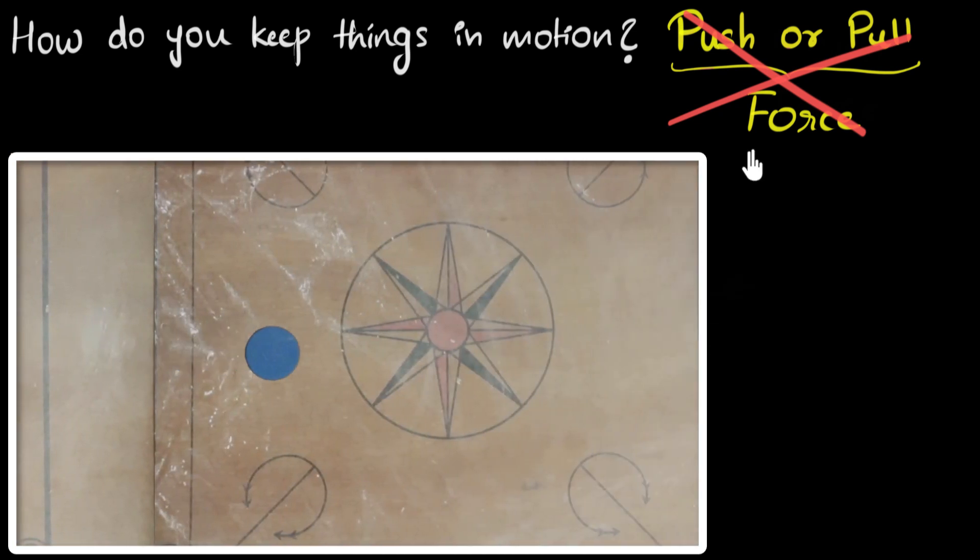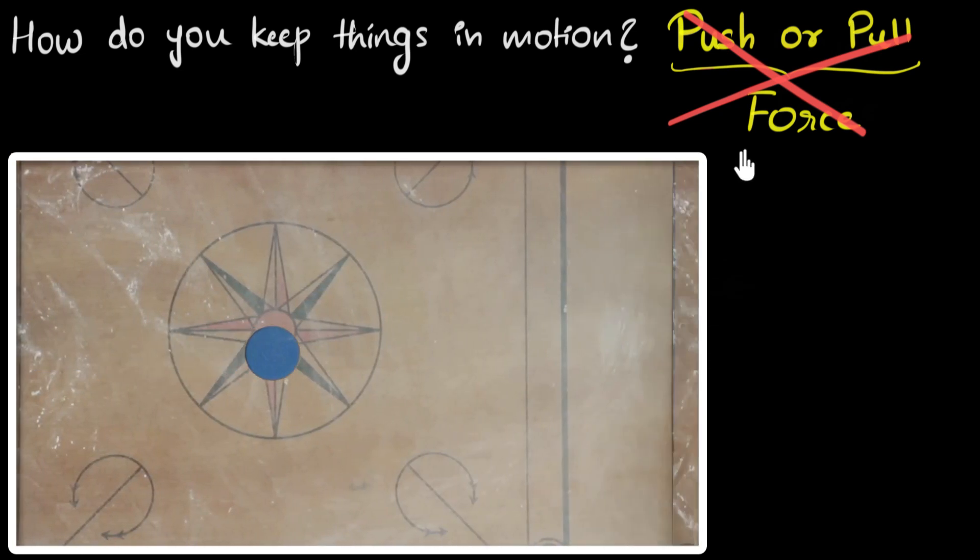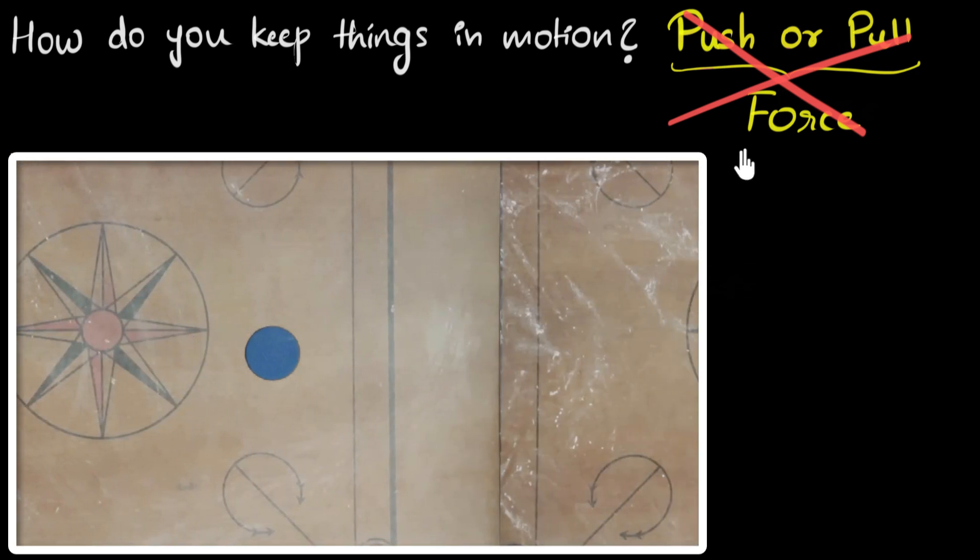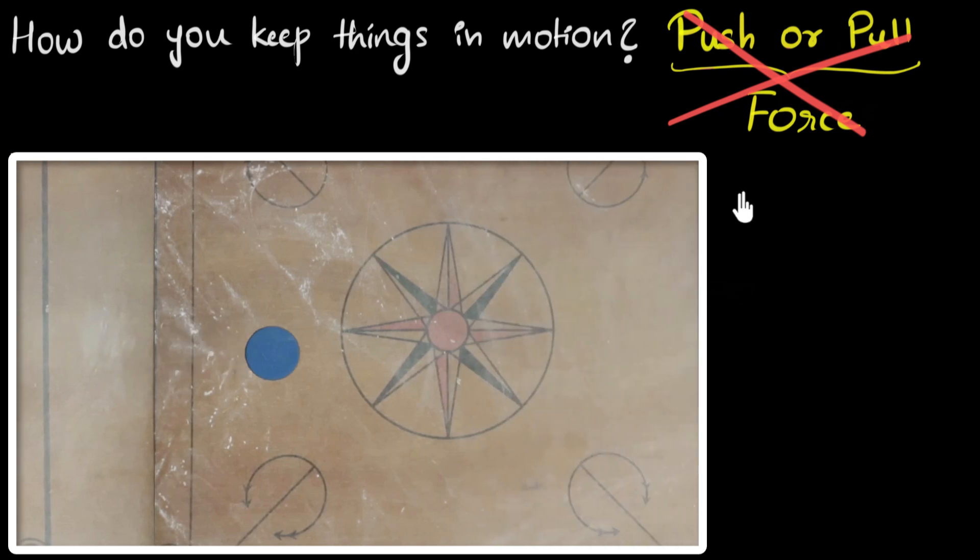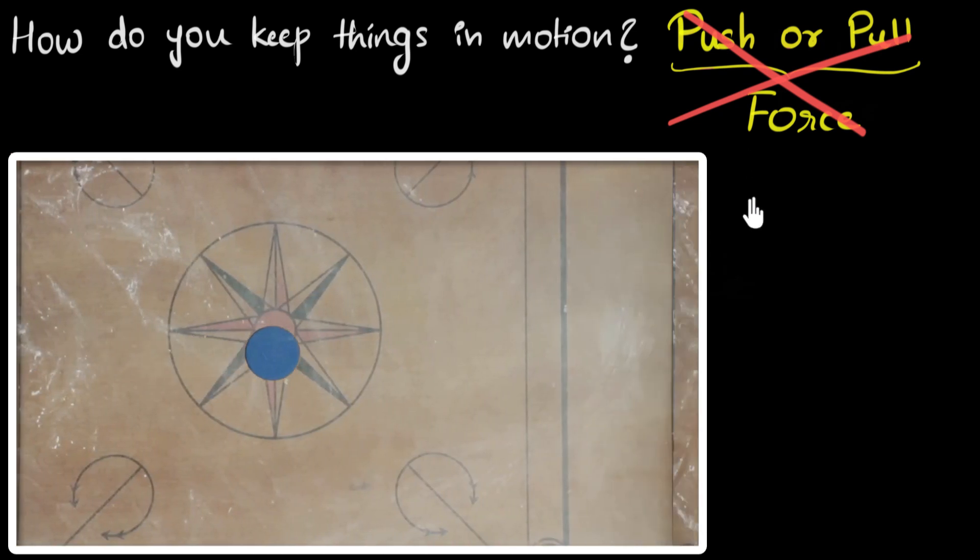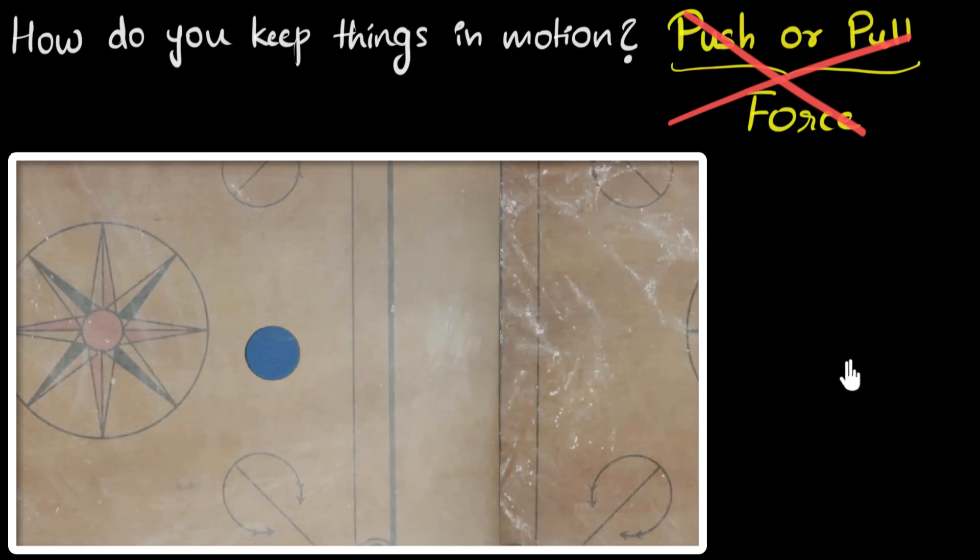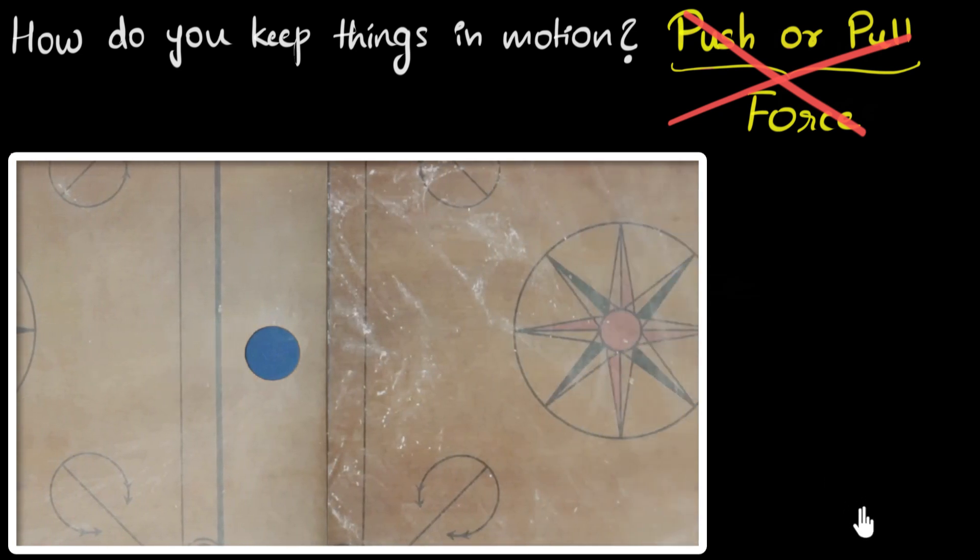Even the chair example that we saw earlier, same case. If there was no friction and if you stopped pushing on it, that chair would keep moving forever. But it's the friction that opposes things and makes everything come to a stop. So the natural state of moving things is to keep moving.